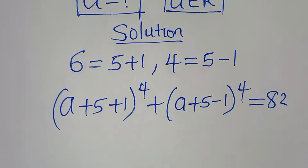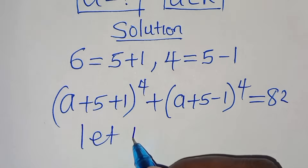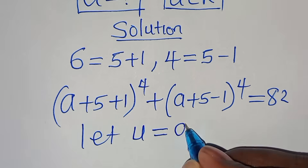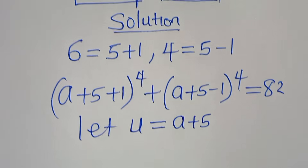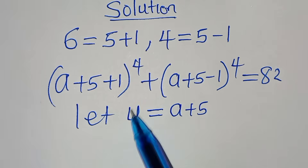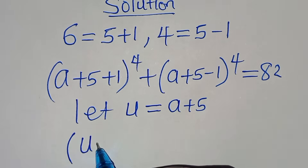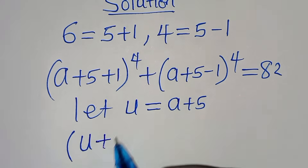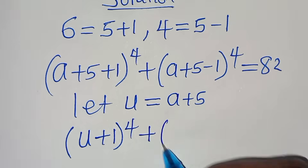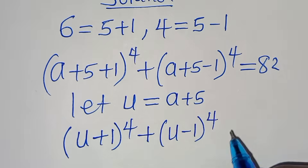The next step is to let u equal a plus 5. We substitute a plus 5 with u, so we have (u + 1) raised to the power of 4, plus (u − 1) raised to the power of 4, equal to 82.